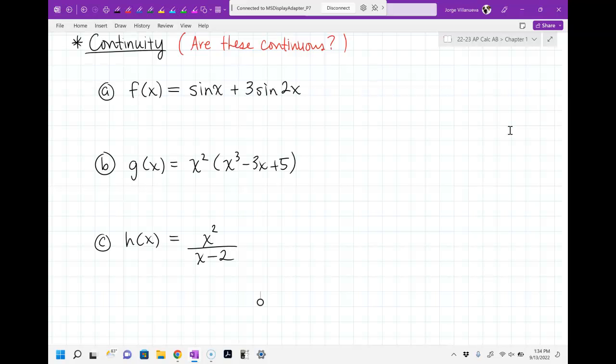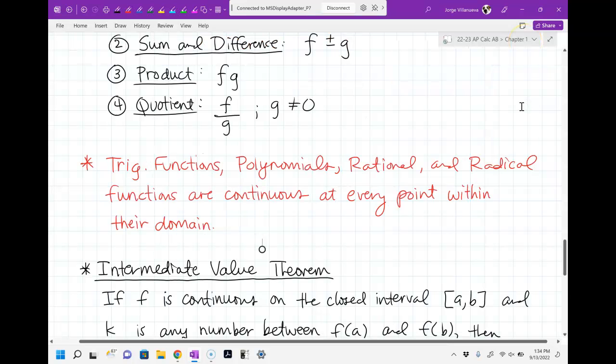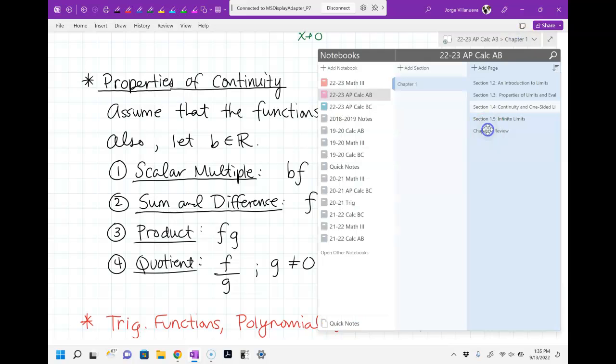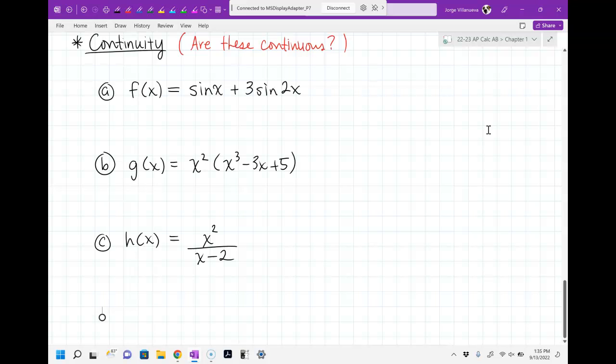So, that means sine of x is continuous. That means 3 sine 2x is continuous. And if you add two continuous functions, we learned in section 1.4, I think that's where I put it. If you add or subtract them, as long as they're continuous, they continue to be continuous. If you multiply them, they're still continuous. If you divide them, they're still continuous, given their domain. So, this one would be yes. That is continuous, because it's a continuous function plus another continuous function.